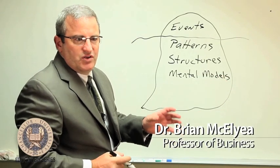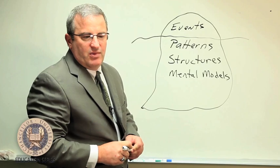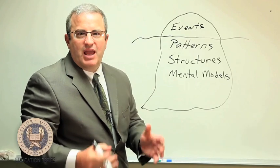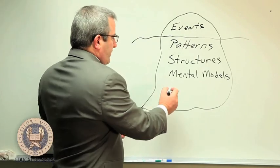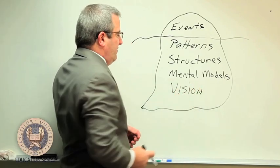And then we talk about mental models. Mental models are that visual representation that you have in your mind about something. As an example, short people can't play basketball. That might be a mental model that you have. And last, at the very bottom of the iceberg, is something called the vision.